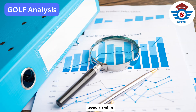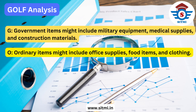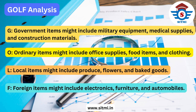In the G class category, products may include items purchased from government entities like military equipment, medical supplies, or construction materials. In the O class, ordinary items might include office supplies, food items, and clothes. In the L class, local items might include flowers or baked goods, while in the F category, foreign items might include electronics or automobile parts.